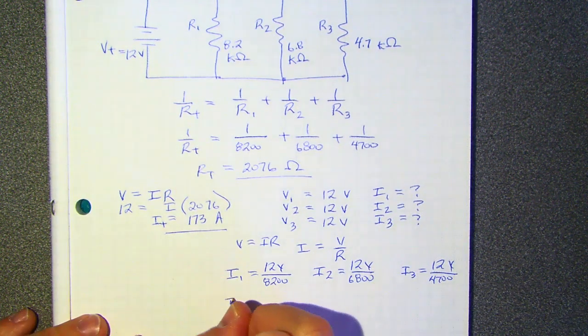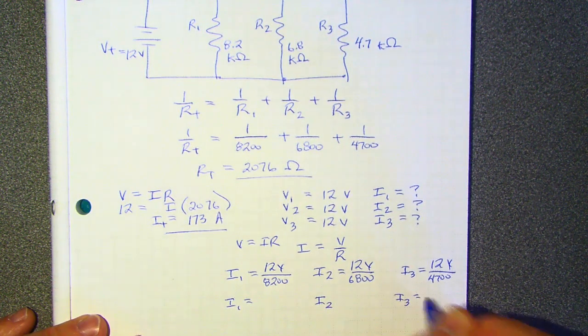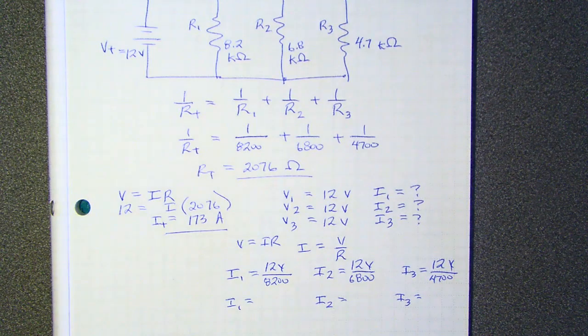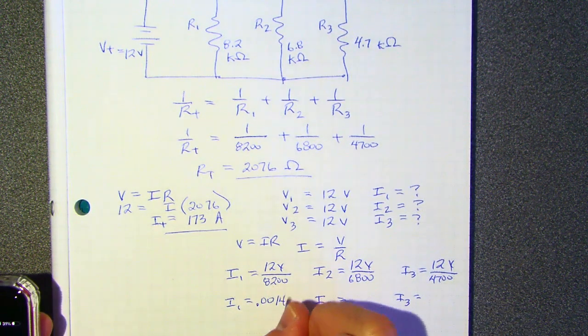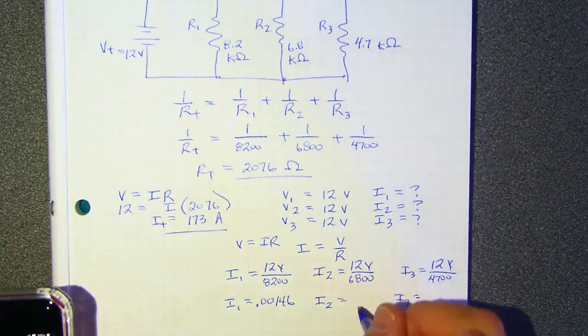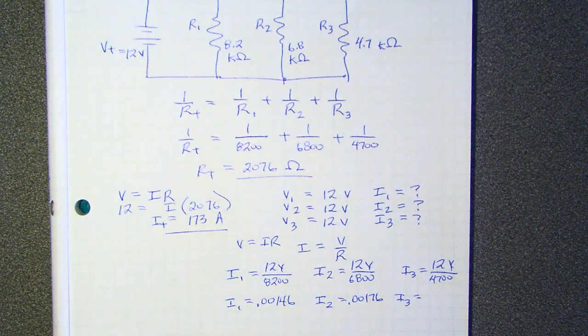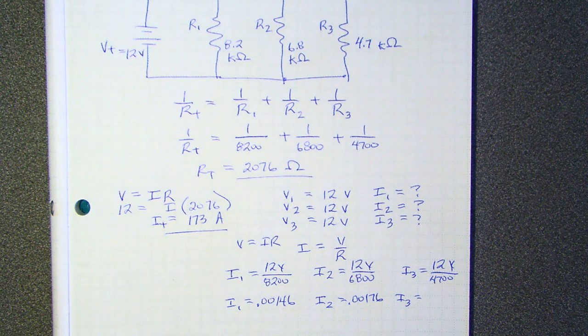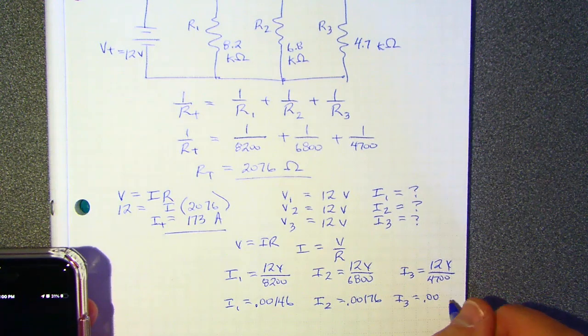So if I divide each of those, am I still on the screen? Yeah. So if I divide each of those, let me see. 12 divided by 8,200 equals 0.00146. All right. And then the next one is 12 divided by 6,800, and that is 0.00176. And then the third one, 12 divided by 4,700 is 0.00255.